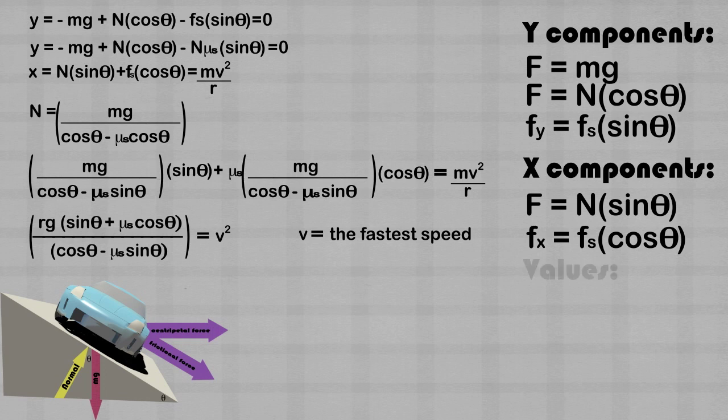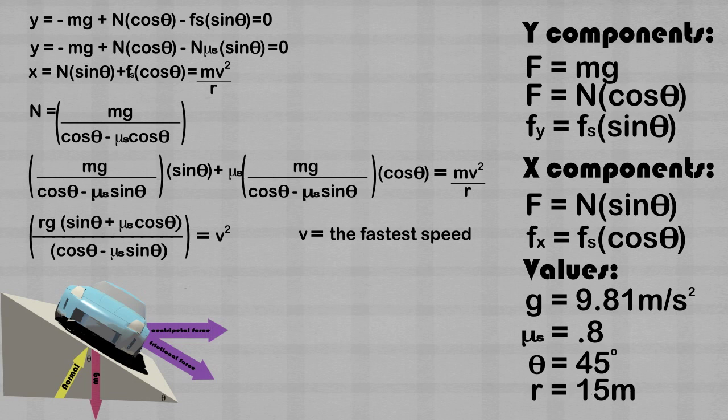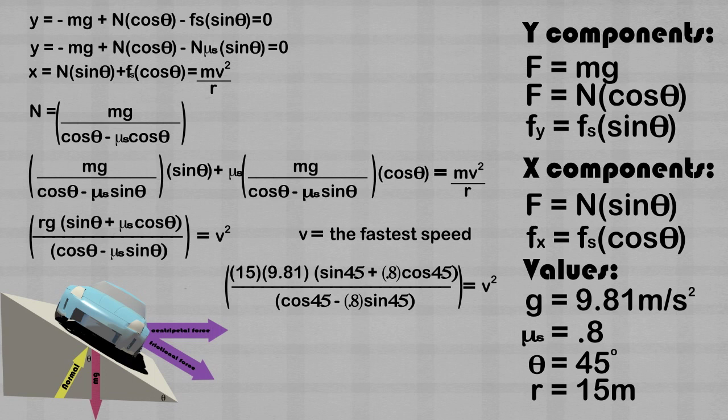Let's solve for the speed given values. The magnitude of gravity is 9.81 meters per second squared. The coefficient of static friction is 0.8. The angle of inclination is 45 degrees. And the radius of the turn is equal to 15 meters. Plug these values into the equation for v and solve. 36.4 meters per second is the fastest speed that the car can safely go.